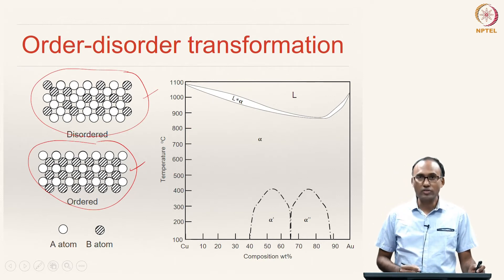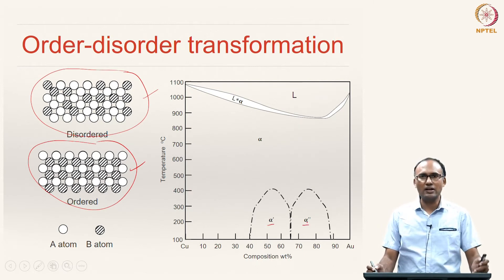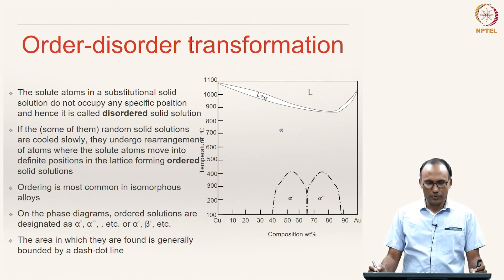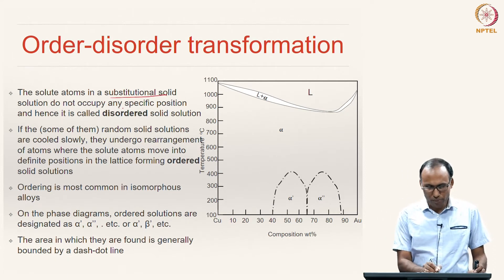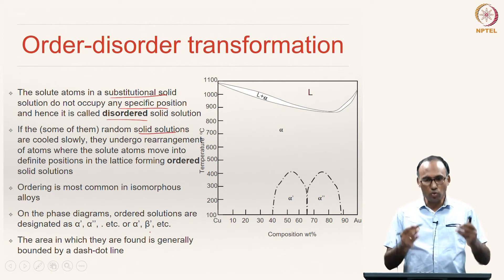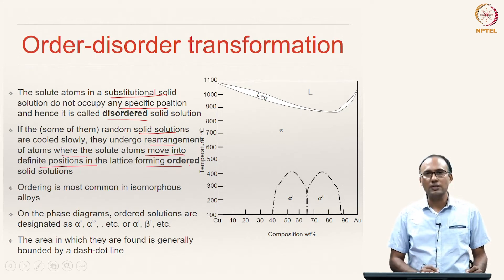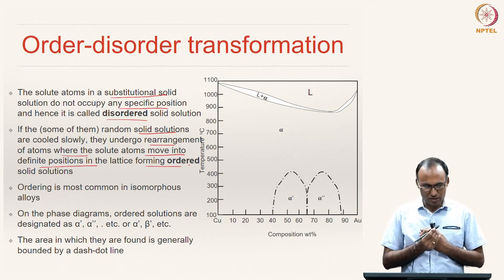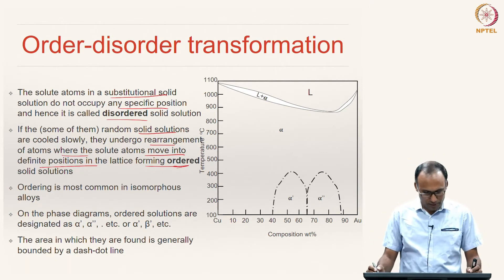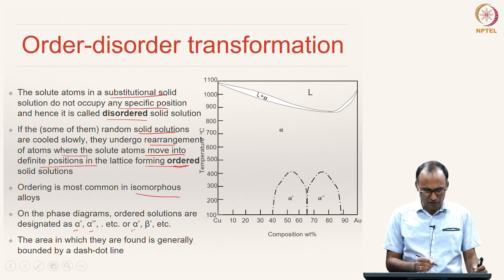On phase diagrams, ordered solid solutions are usually shown by dash-dot lines. The Greek letters used have a prime notation: alpha-prime represents one kind of ordered solid solution, and alpha-double-prime represents another. Solute atoms in a substitutional solid solution do not occupy specific positions — that is a disordered solid solution. If random solid solutions are cooled slowly, atoms rearrange so that solute atoms move into definite lattice positions, giving order — such solutions are called ordered solid solutions. This ordering is very common in isomorphous alloys.